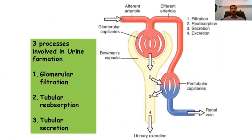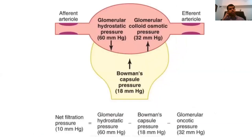First we'll discuss the physiological causes of oliguria. To do this, it's important to refresh our memory on how urine is produced. Urine formation is mainly dependent on three processes: glomerular filtration, tubular reabsorption, and tubular secretion. What mainly governs what gets filtered is the hydrostatic and oncotic pressures operating around the glomerulus.